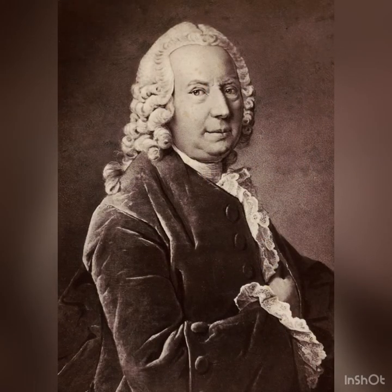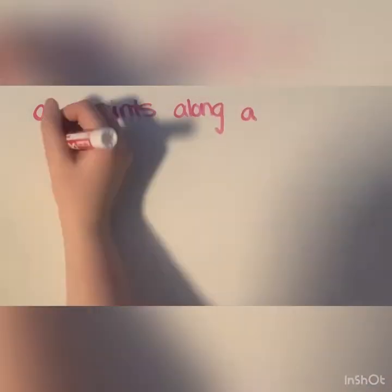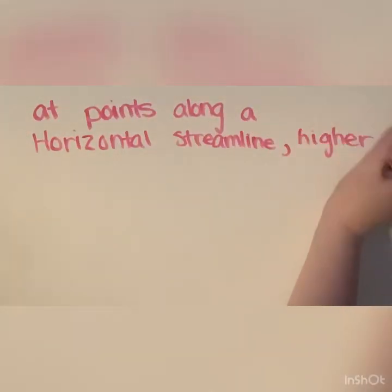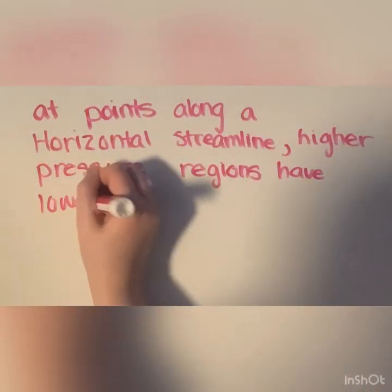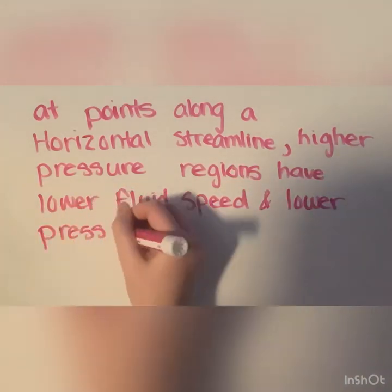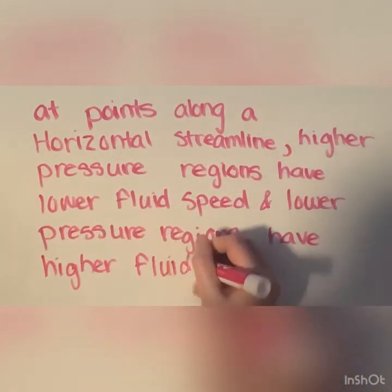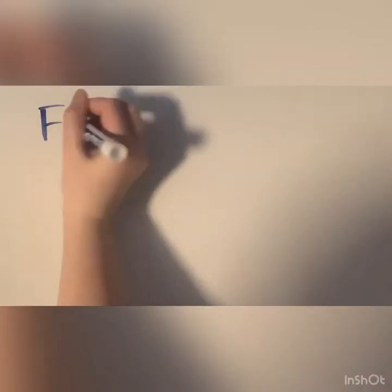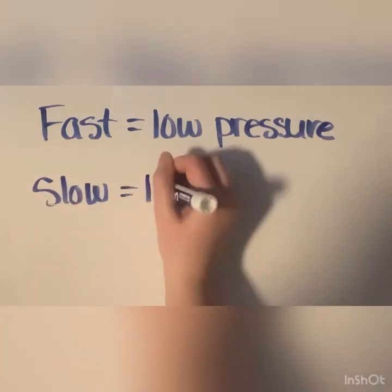Now let's take a look at Bernoulli's principle. Bernoulli's basic principle was that at points along a horizontal streamline, higher pressure regions have lower fluid speed and lower pressure regions have higher fluid speed. So in simple terms, fast equals low pressure and slow equals high pressure.